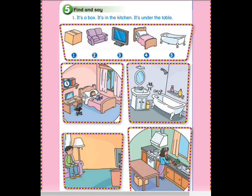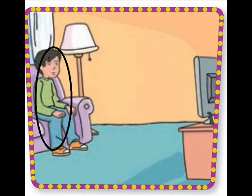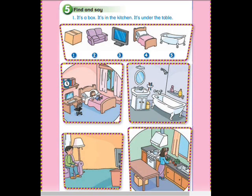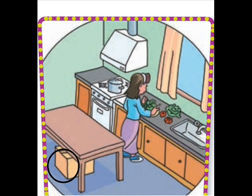Where's the boy? He's in the living room. He's on the sofa. Where's the box? It's in the kitchen. It's under the table.